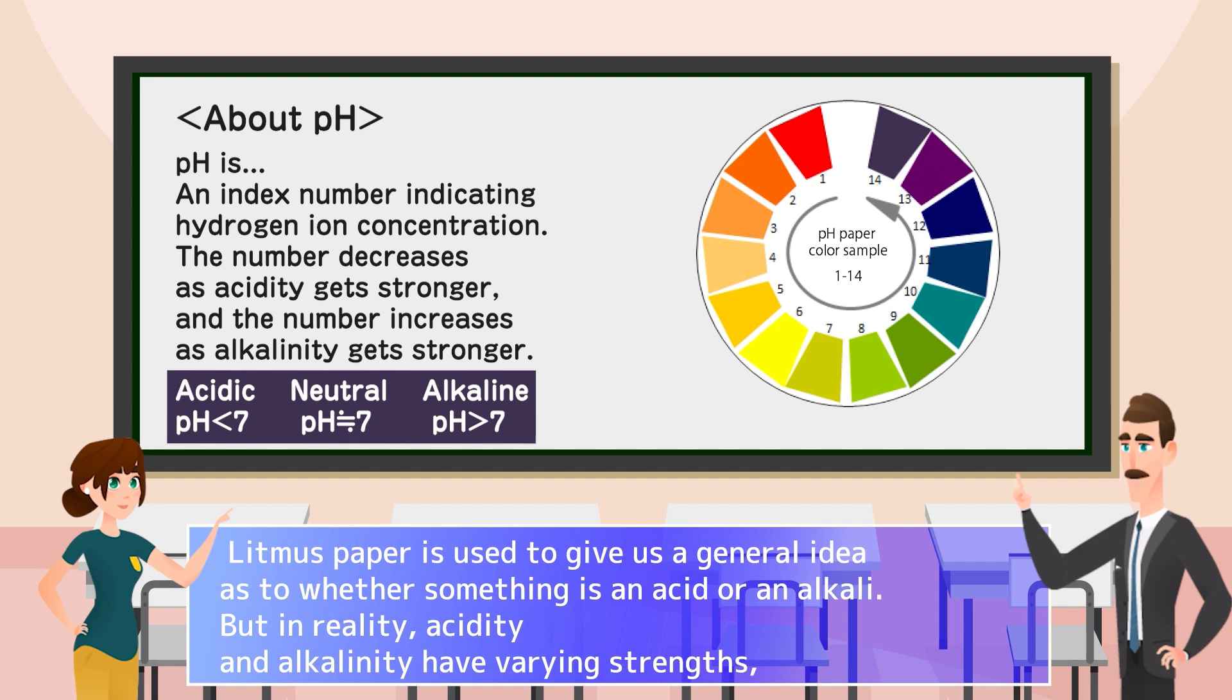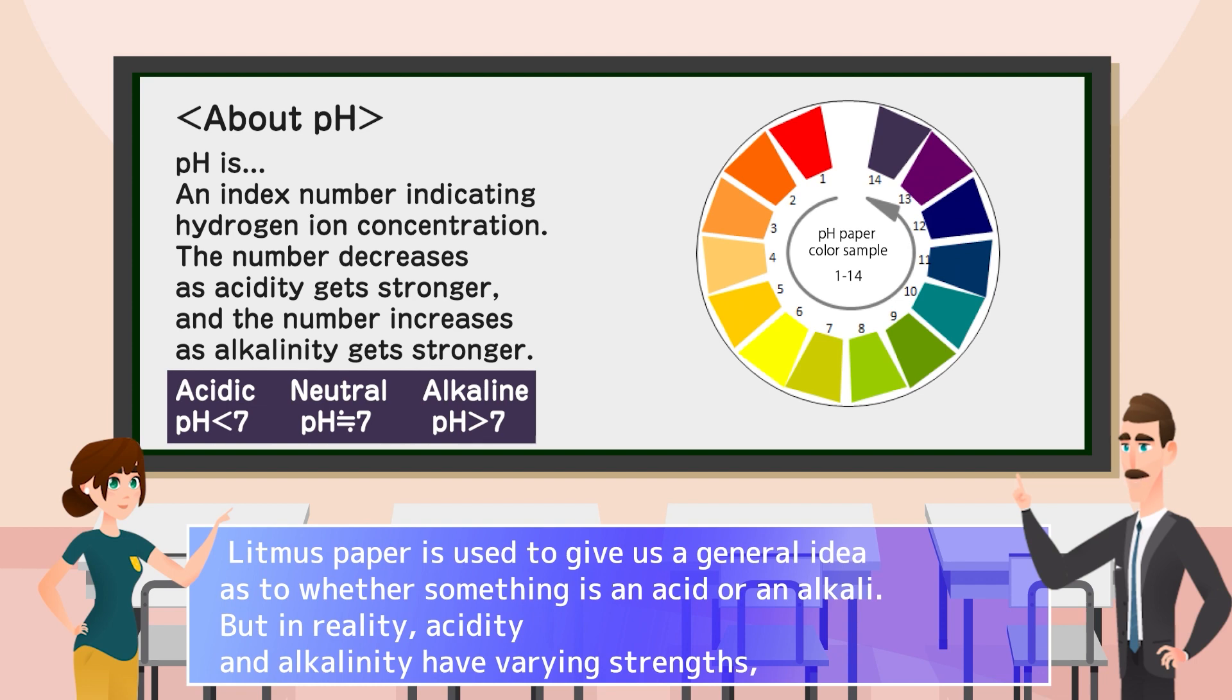Litmus paper is used to give us a general idea as to whether something is an acid or an alkali. But in reality, acidity and alkalinity have varying strengths, and to find out that strength, we can use pH paper.